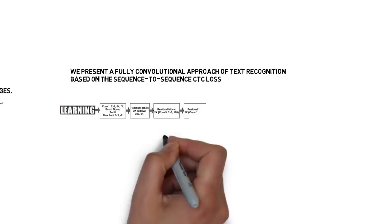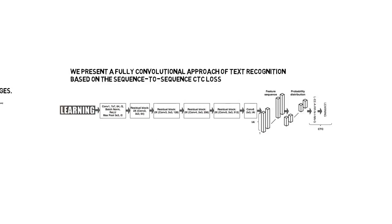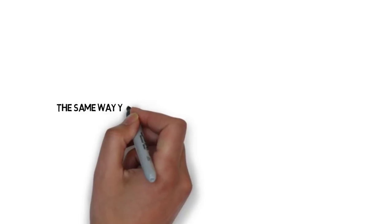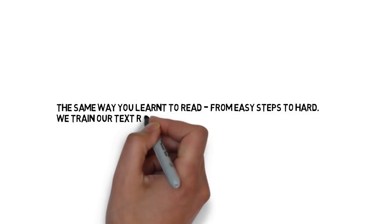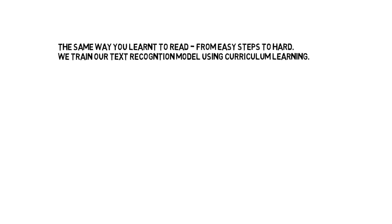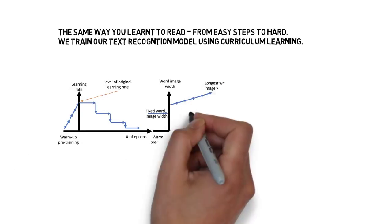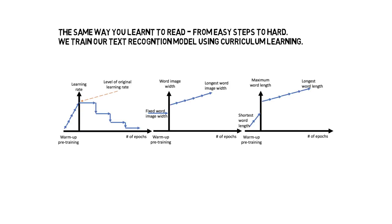We present a fully convolutional approach of text recognition based on the sequence-to-sequence CTC loss. The same way you learn to read, from easy steps to hard, we train our text recognition model using curriculum learning.